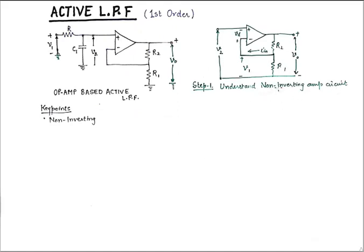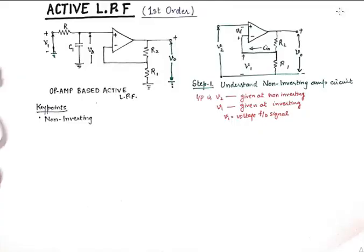The step number one will be to understand the non-inverting amp circuit. Now out of this entire circuit of low pass filter I am just focusing on the functioning of non-inverting amp circuit. Which has an input V2 given at the non-inverting terminal and this input V1 is at the inverting terminal but it is the feedback input. So if we look at this step number one the input is V2 and it is given at the non-inverting terminal and V1 is given at the inverting terminal and V1 is the voltage feedback signal.